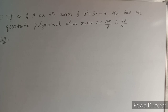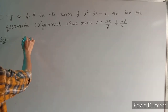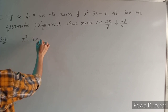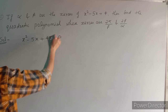Now let's start the first question. If alpha and beta are the zeros of x² - 5x + 4, then we have to find the quadratic polynomial whose zeros are 2α/β and 2β/α. First, we will find the zeros of the given quadratic equation. If the zeros cannot be found by splitting the middle term, we will understand that method in the next question.